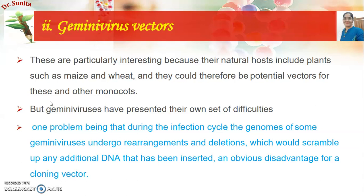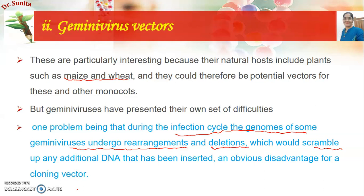Next among plant virus vectors are geminiviruses. These are particularly interesting because their natural hosts include monocot plants such as maize and wheat, making them potential vectors for monocots. However, a major problem is that during the infection cycle, some geminiviruses undergo genome rearrangements — such as deletions or insertions of new sequences — which is very disadvantageous for a cloning vector. Therefore, geminiviruses are also not commonly used for gene cloning.